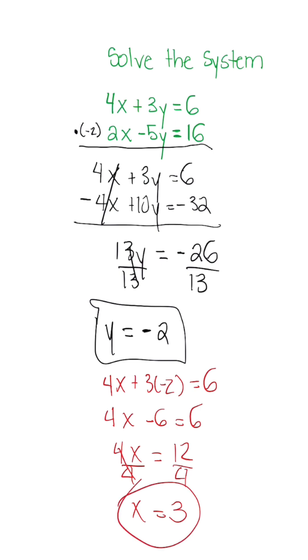So the coordinate or the solution to the systems of equations would be the point or the ordered pair 3, negative 2.